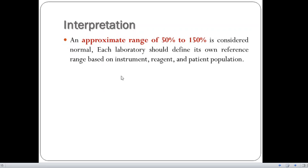What is the interpretation? An approximate range of 50% to 150% is considered normal. And in each laboratory, it should be defined on its own reference range based on the instruments and the reagents and the patient population.